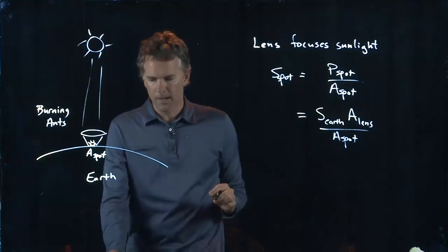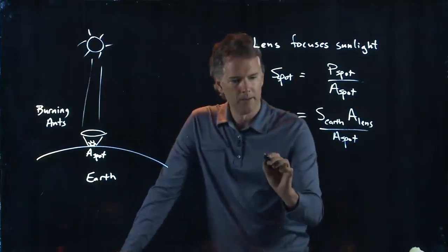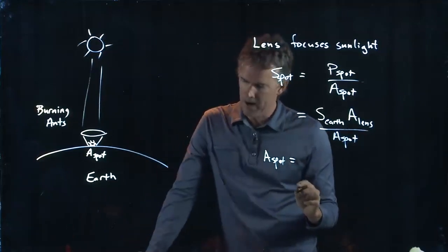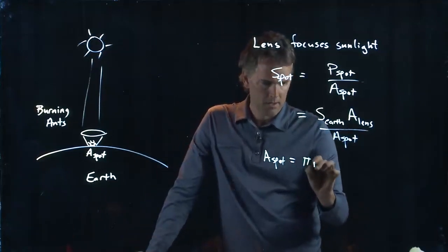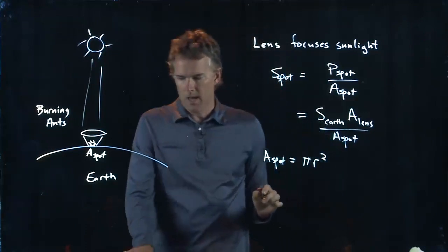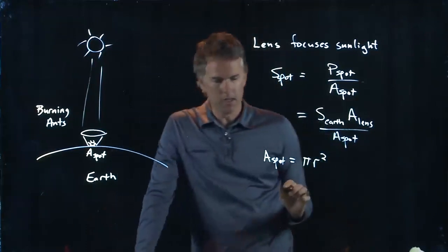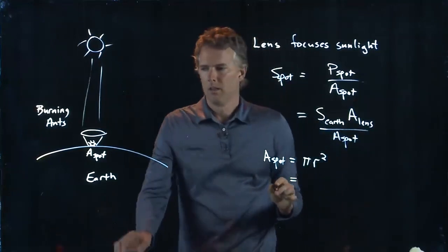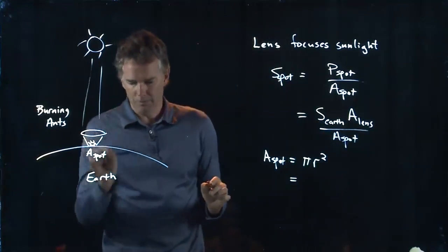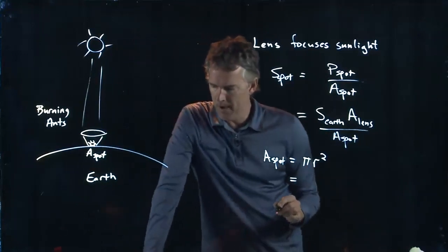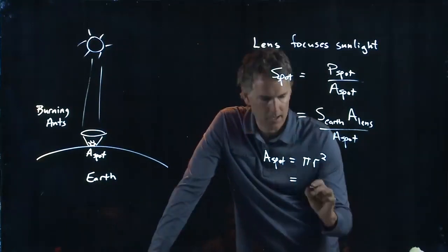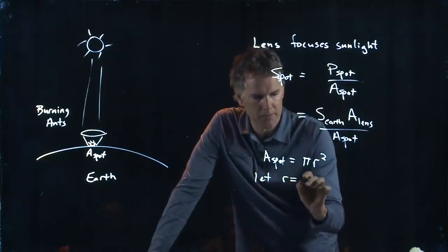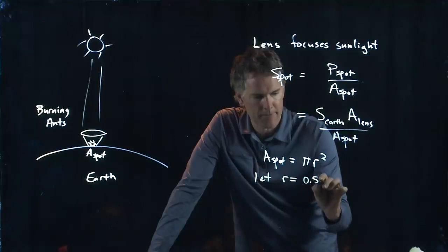So, how big is your spot? Well, it's a circular lens so it's just pi r squared. And let's say that the spot is pretty small, let's say that it has a diameter of about a millimeter, so we'll let r be something like a half a millimeter.